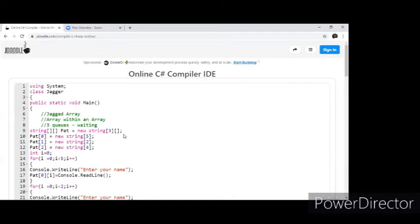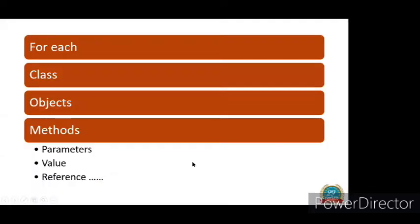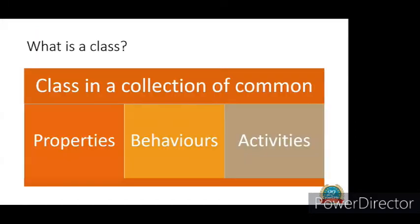Today I'm going to talk about class and objects. What is a class? Let me give you my way of understanding it. Class is a collection of common properties, behaviors, and activities. We always say real-time entity could be easily expressed and all that.